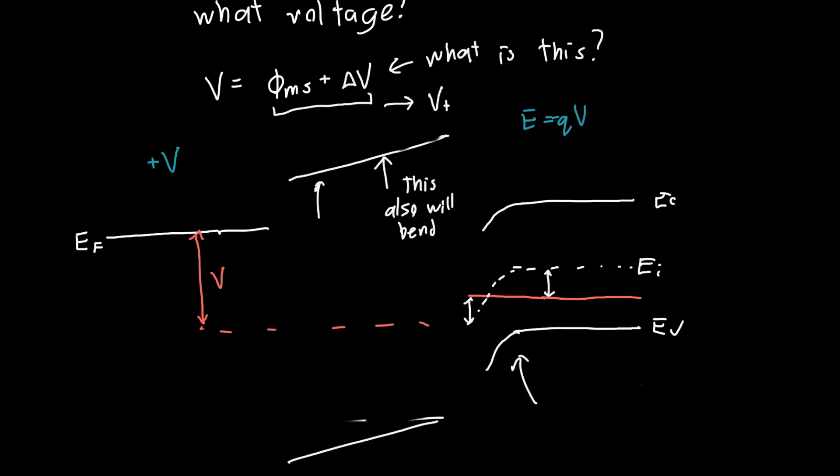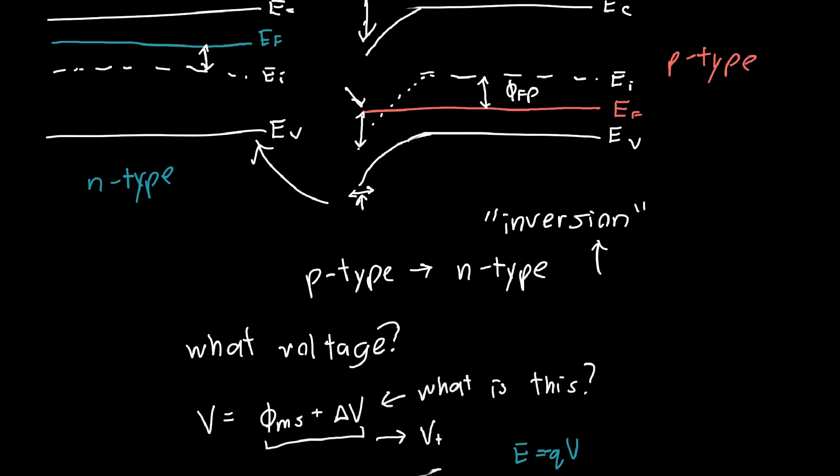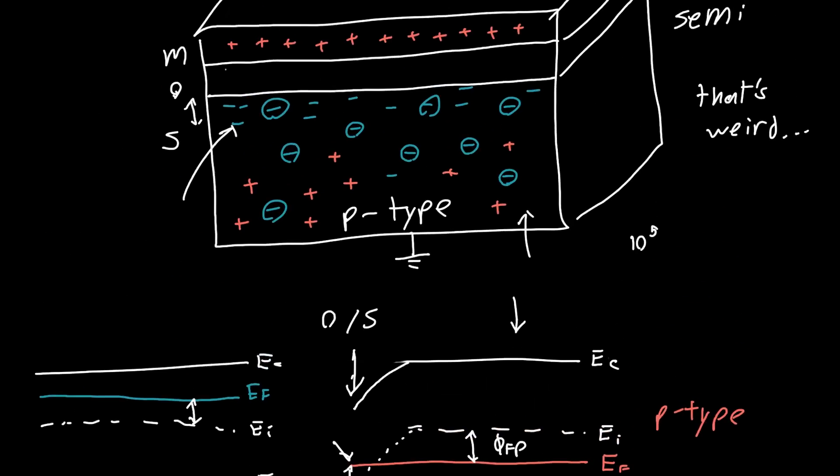But this is the general idea. We're causing band bending such that we get an inverting of the type of semiconductor. So where we once had holes we now have a bunch of electrons. And we've also got these ions sitting here but we don't really talk about those, we just like to pretend they're not there, but they are there so you should be aware that they do still exist. So if you have any questions or comments please feel free to post them down below. If you like the video please push the thumbs up button and subscribe. Thanks for watching, I'll see you next time, bye.